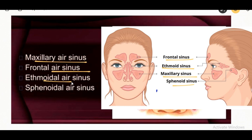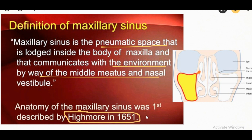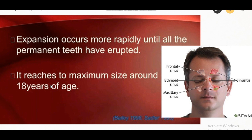The maxillary sinus is a pneumatic space lodged inside the body of the maxilla. It communicates with the environment by way of the middle meatus and the nasal vestibule. The maxillary sinus is the largest of all paranasal sinuses and the first to develop. It starts as a shallow groove on the medial surface of the maxilla during the 4th month of intrauterine life, and reaches maximum size around 18 years of age.